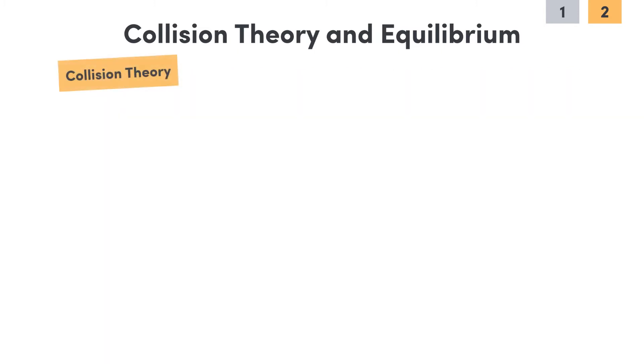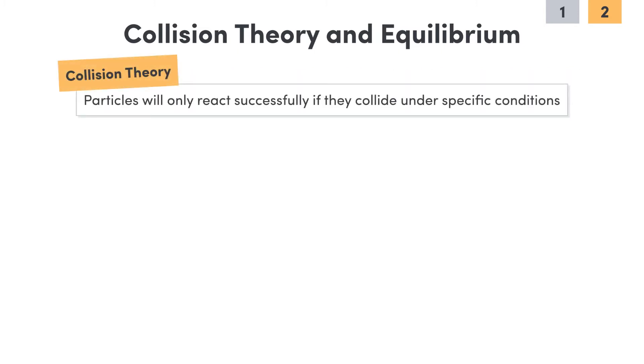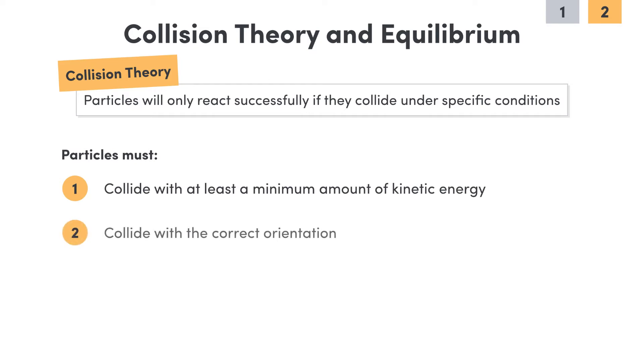We've covered collision theory before, but remember, it states that particles will only react successfully if they collide under specific conditions. It states that a reaction won't take place between two colliding particles unless they collide with at least a minimum amount of kinetic energy and they collide with the correct orientation. They need to be facing each other the right way.